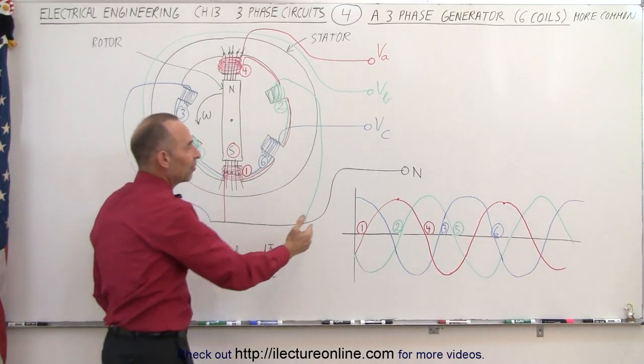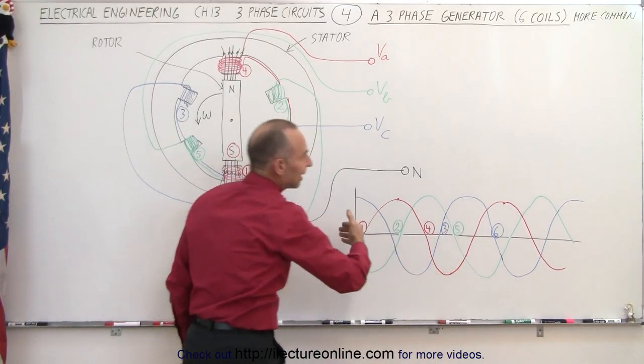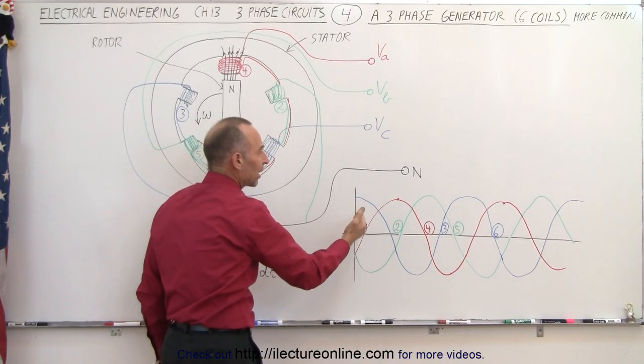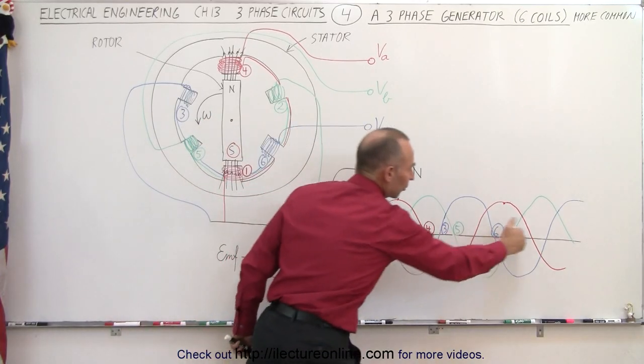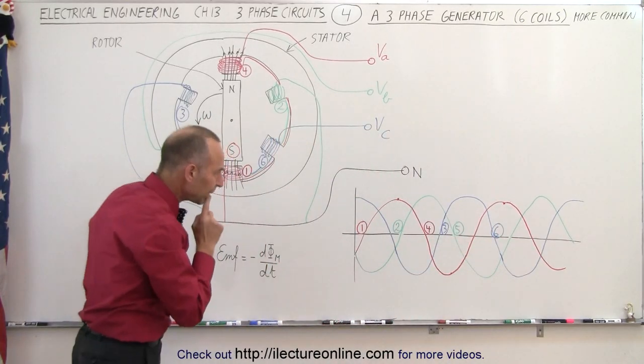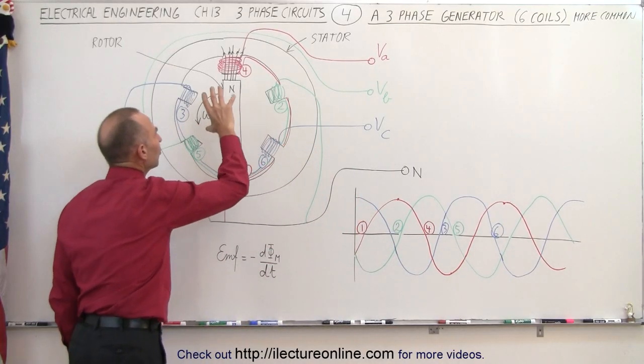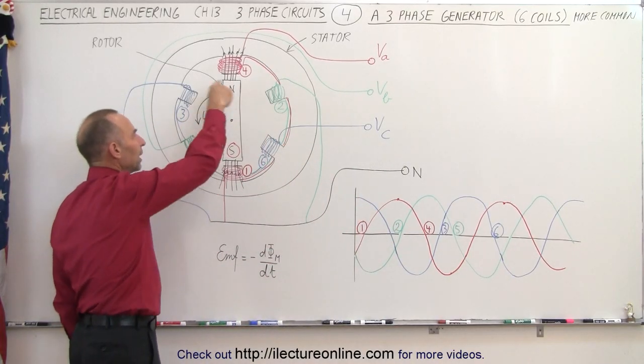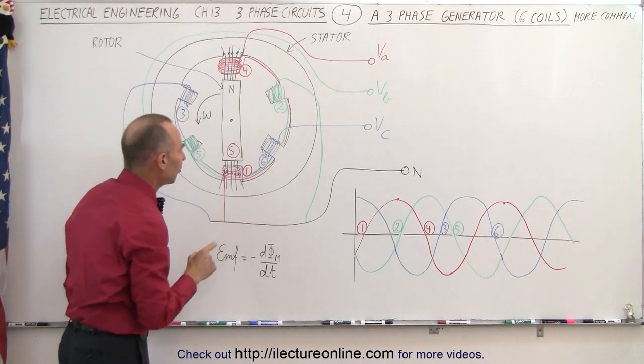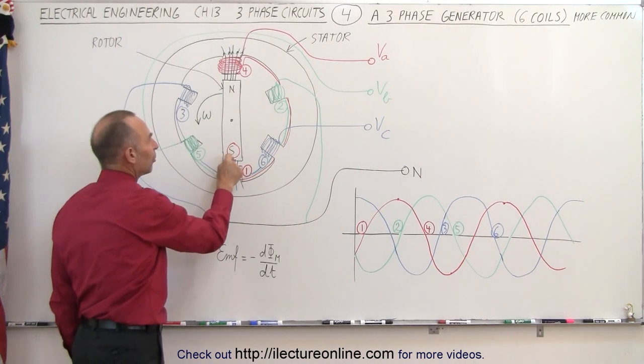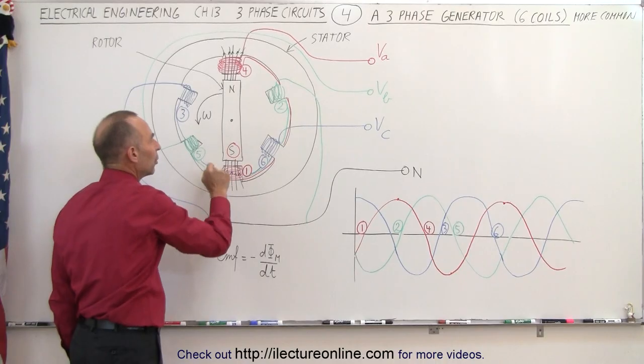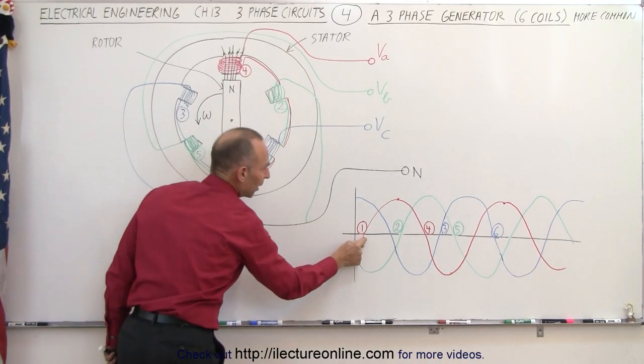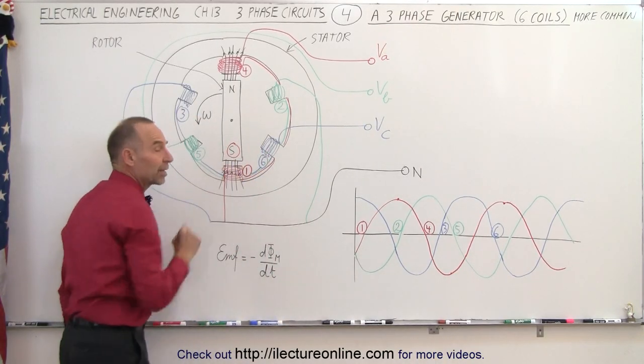Secondly, we have the phase diagram right here, at least we have the diagram that gives us the voltage as a function of time. And notice there's numbers associated with that, with the position of the rotor. The rotor will rotate around like this, and notice if we keep track of where the south portion of the magnet is inside the rotor, notice that this position right here corresponds to the south being over here.